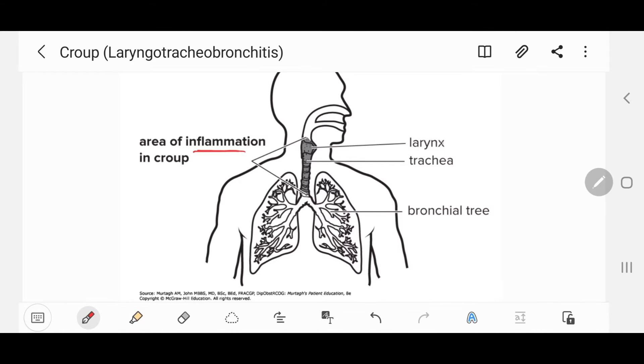Hi everyone, in this video I will talk about croup, which is an inflammation of the upper airway, hence the name laryngotracheobronchitis. It is usually triggered by a virus, occurs generally between the ages of six months and six years. The viruses are usually the parainfluenza virus one and two or the RSV (respiratory syncytial virus), and it is often worse at night.